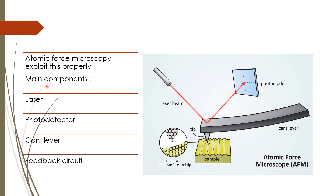The main components of an atomic force microscope involve a laser, photodetector, cantilever, and feedback circuit. The sample is scanned by a very sharp tip attached to a cantilever, and a laser beam is incident on the top of the cantilever. The reflection is recorded using a photodiode. As the tip scans the sample, it experiences forces and gets deflected. Because of these deflections, the light reflected from the cantilever changes direction and is recorded by the photodiode. Finally, a feedback circuit controls how far from the sample the tip will be scanning, and using this we take out the image of the surface.